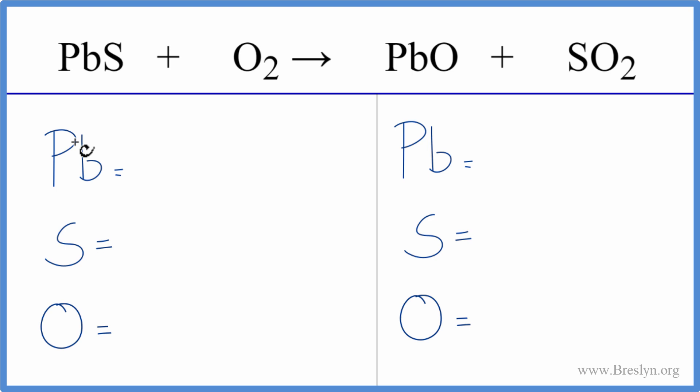We have one lead atom, one sulfur, and two oxygens. On the product side we have one lead, one sulfur, and for oxygens we have one plus—make sure you count these two here—that gives you a total of three oxygen atoms.